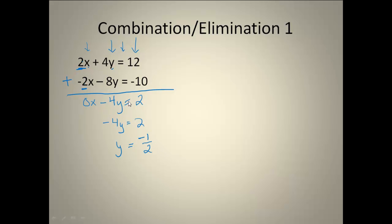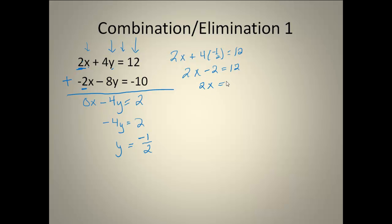I have an x and y for each equation, so I need to plug this back into one of my equations — it doesn't matter which one. I'm going to plug it back into the top. So I would have 2x plus 4 times negative one half equals 12, and then I can solve this to figure out what my x value is. So now I have my x-y pair. My solution is (7, negative one half).